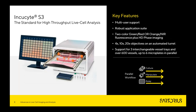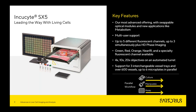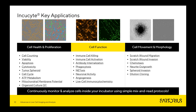The Incusite S3 is our standard for high-throughput live cell analysis, with the ability to analyze up to six plates at the same time with two fluorescent colors. The latest member of the Incusite family is our Incusite SX5 — our most versatile system, with space for six plates at the same time, but with more fluorescent colors to accommodate more multiplexing, more complex cell culture models, and more applications like our new range of metabolism assays. I'd now like to hand over the presentation to my colleague Matt Tomlinson.